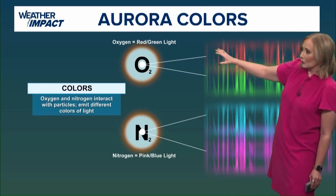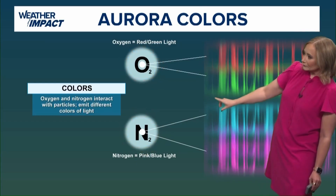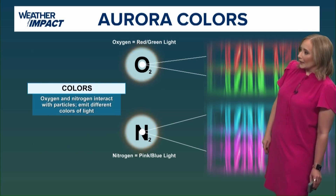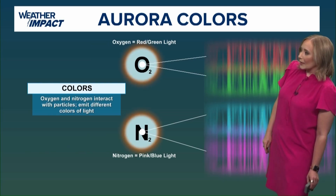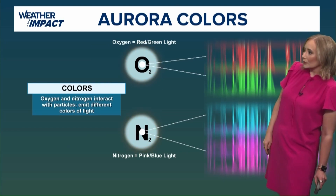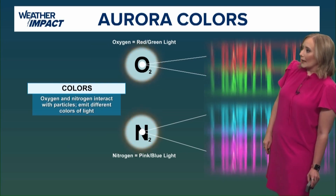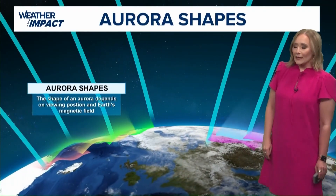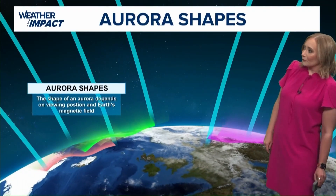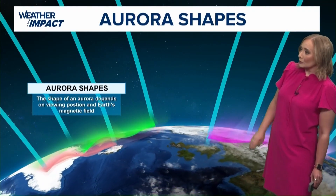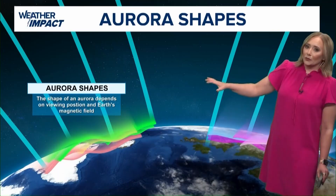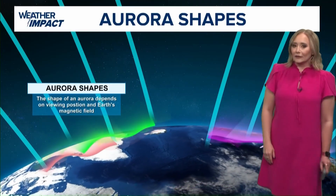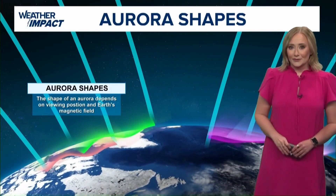Oxygen produces red and green light, while nitrogen produces pink and blue light. They emit different colors of light once they interact with the particles. We also have different aurora shapes. The shape of an aurora is going to depend on your viewing position and Earth's magnetic fields.